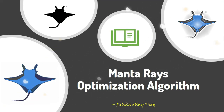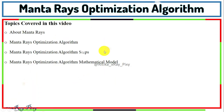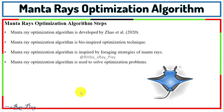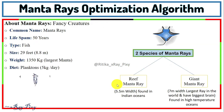This video is based on the Manta Rays Foraging Optimization Algorithm. Topics covered include a basic introduction about this algorithm, what it is all about, the main inspiration behind it, different mathematical models used, and various steps. Manta Rays Foraging Optimization Algorithm is a bio-inspired optimization technique inspired by the intelligent foraging strategies of Manta rays, and it can be used to solve different optimization problems.